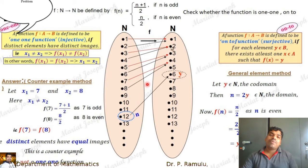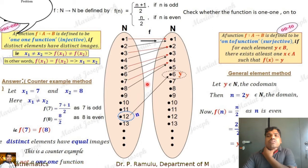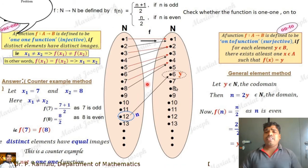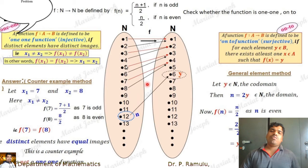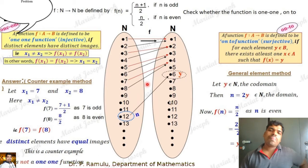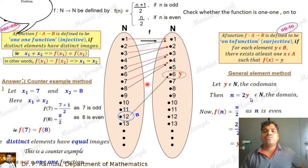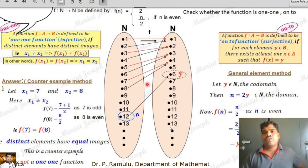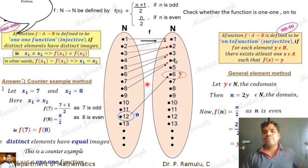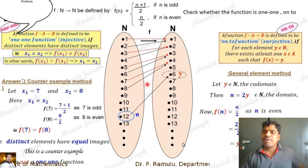Checking onto: For any y in ℕ, I need to find a pre-image. If y = n, I can take the element 2y in the domain — then f(2y) = 2y/2 = y (since 2y is even). So for any element in the codomain, we have a pre-image. For example, if y = 11, take n = 22; f(22) = 22/2 = 11. Every element in the codomain has a pre-image. Therefore, f is onto (surjective) but not one-one (not injective).